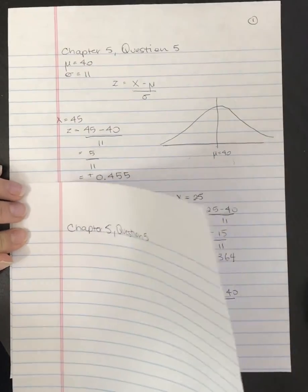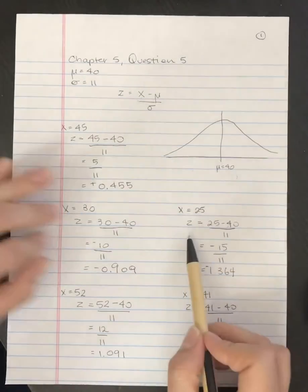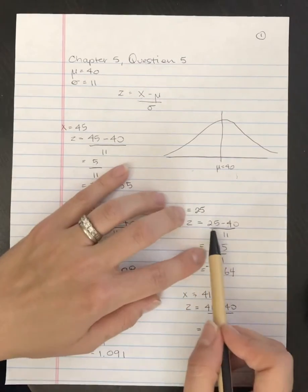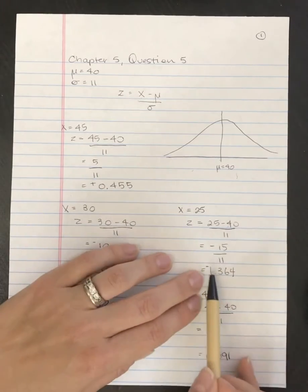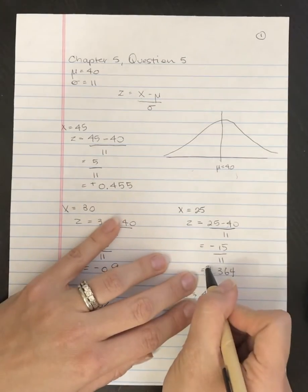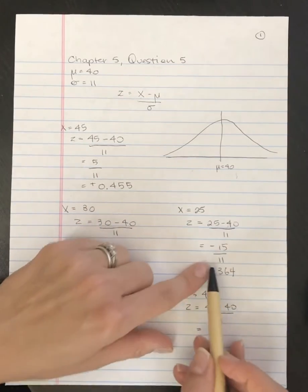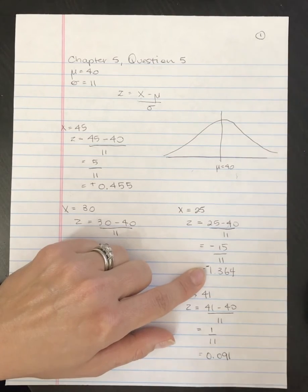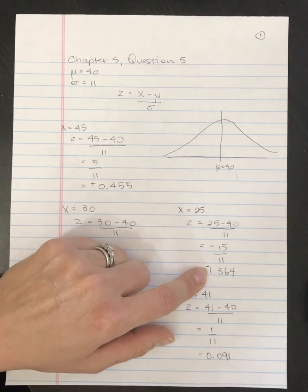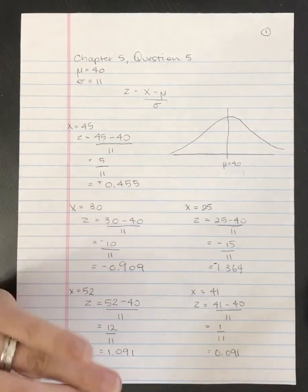I just want to point out how easy it is to make a mistake by forgetting the negative value. Coming back to x equals 25: 25 minus 40 gives negative 15, but it's easy to forget that negative sign. It is a negative z-score, and if you leave off that negative you'll lose points on an exam or pick the wrong answer on a multiple choice question, so be careful.